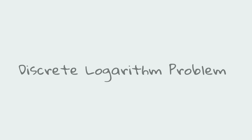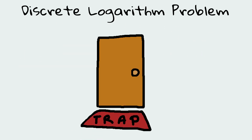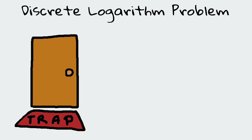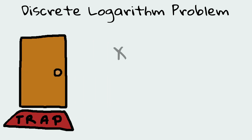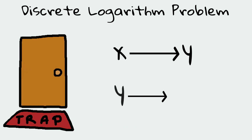In order to understand the Diffie-Hellman algorithm, one must understand the discrete logarithm problem in maths. The logarithmic function follows the concept of a trapdoor function. A trapdoor function is easy to compute in one direction, yet difficult to compute in the opposite direction.